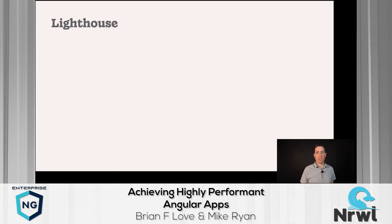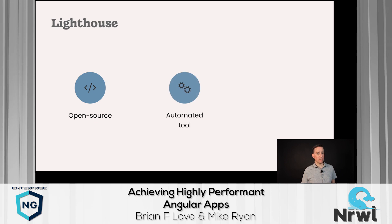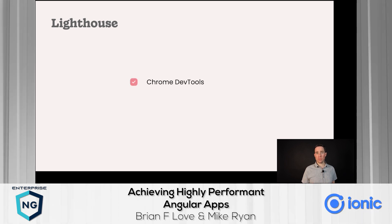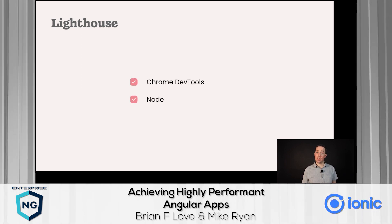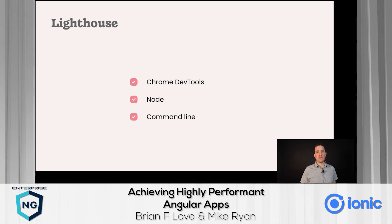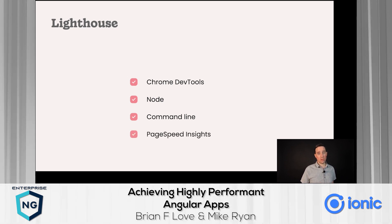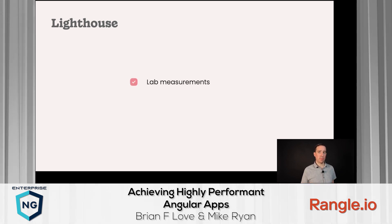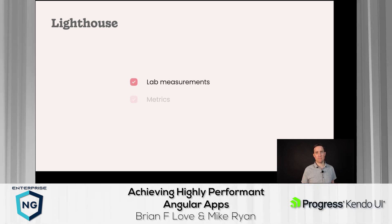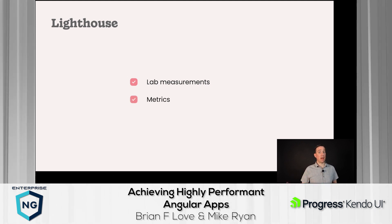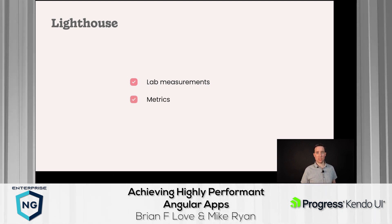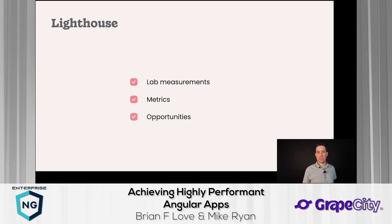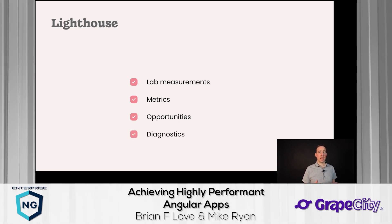Lighthouse is an open-source automated tool for improving the quality of our web apps. Lighthouse runs in Chrome DevTools, we can use it in Node on the command line, and PageSpeed Insights also uses Lighthouse. It enables us to perform lab measurements of our web application's performance and provides measurements around the metrics I mentioned, plus additional ones, as well as opportunities to improve performance and diagnostics.